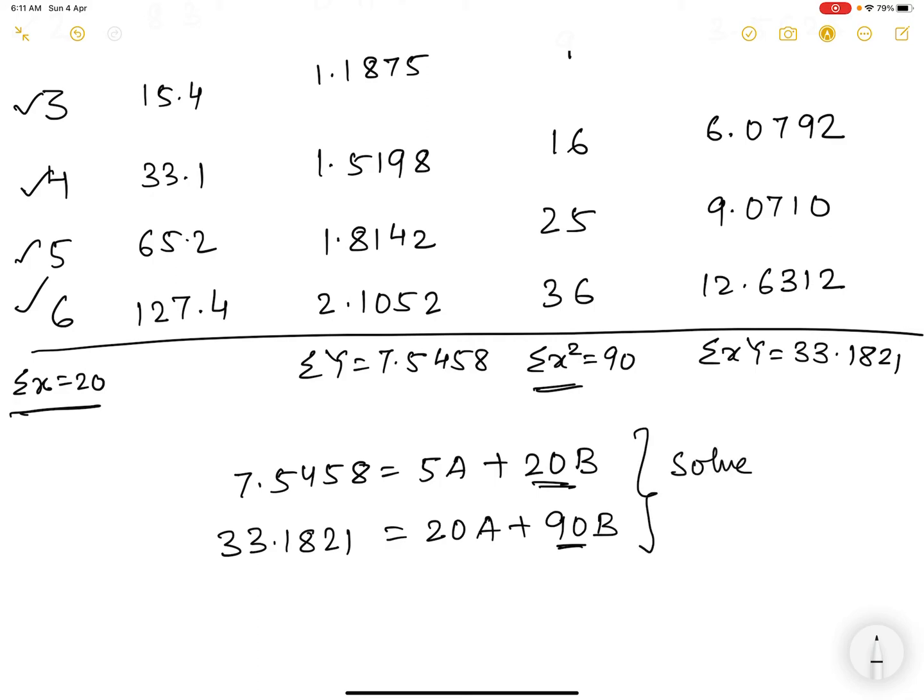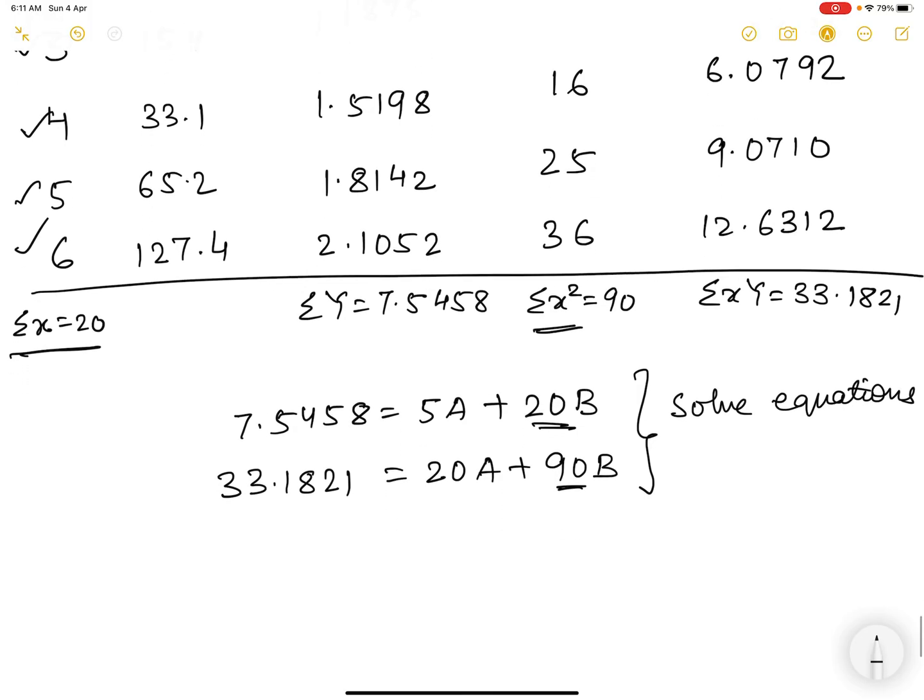Solve the equations. You have the facility to solve the equation using your calculator also, or you may use the elimination method, or you may use the matrix method. Whatever you remember or know. So let us solve this equation. And on solving these equations, we will get the value of unknowns, that is capital A and capital B. And the values are coming out to be this.